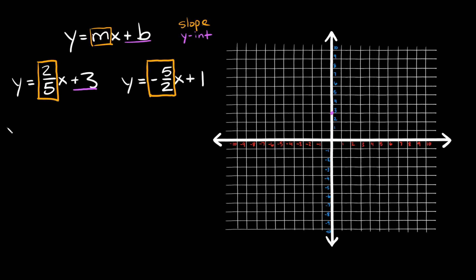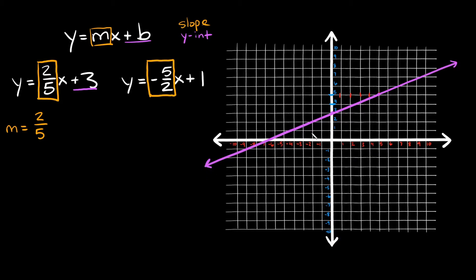The slope here is two-fifths. The top number is your rise and the bottom number is your run, so we're going to go up two and then over five to the right. Starting from our plotted point, we go up one, two, then over one, two, three, four, five — and we just found another point. Now just draw a straight line between the two points.